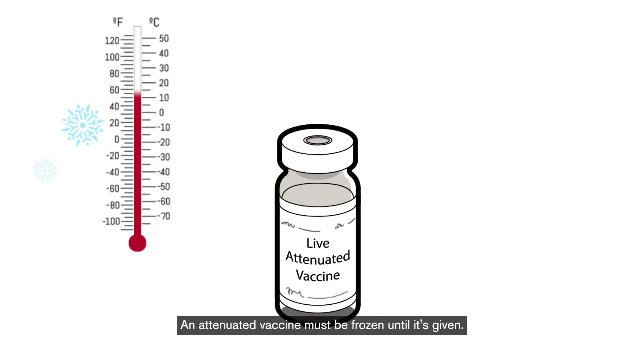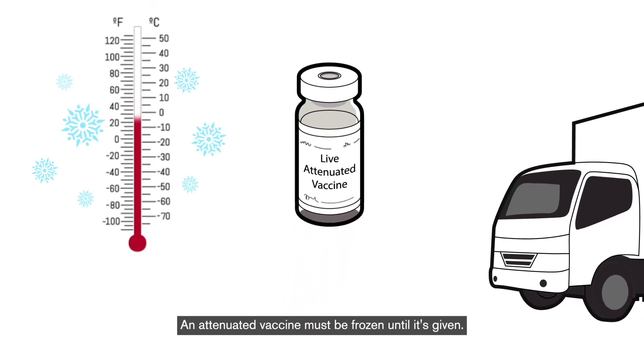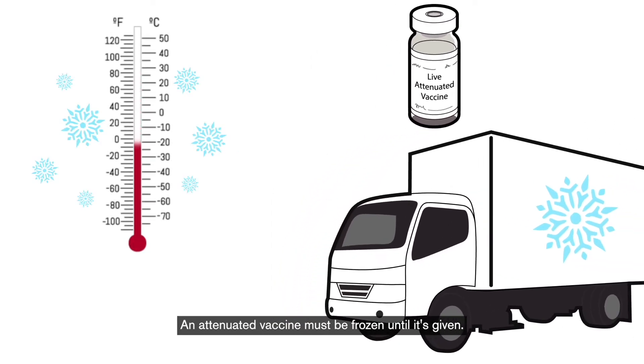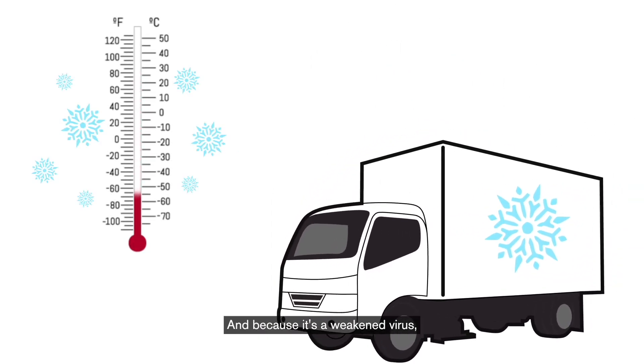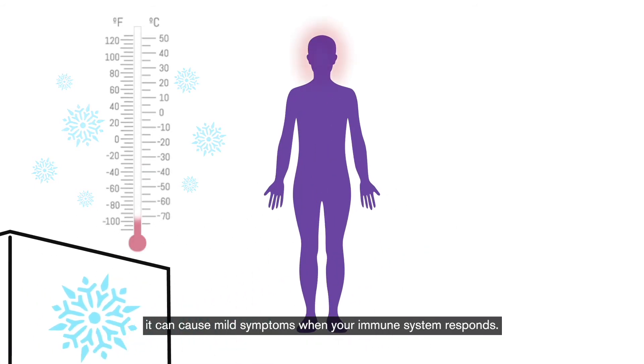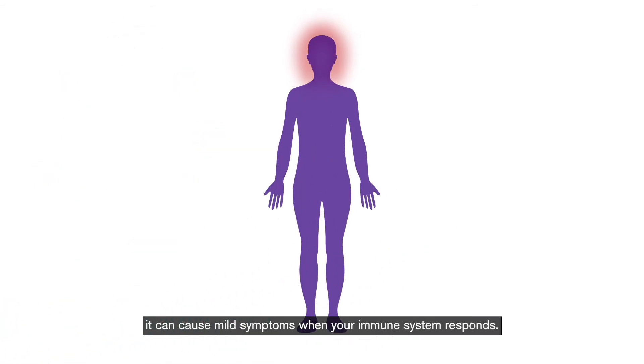An attenuated vaccine must be frozen until it's given. And because it's a weakened virus, it can cause mild symptoms when your immune system responds.